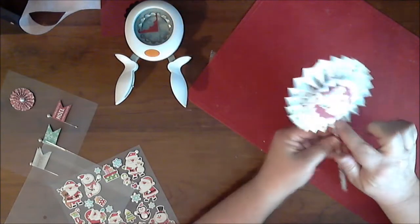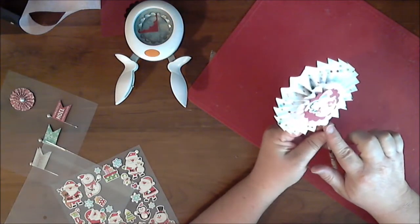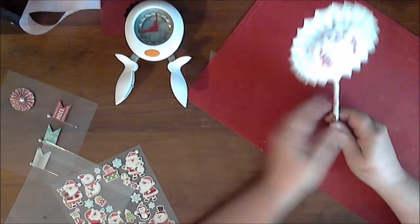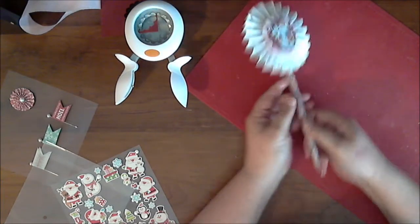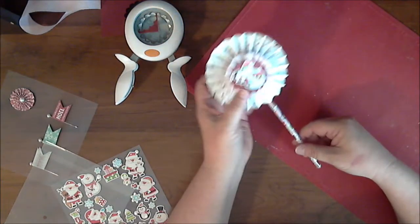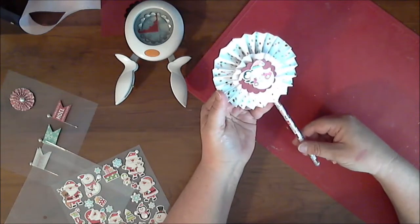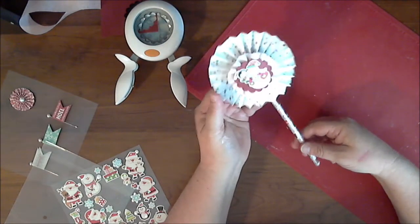Now you can be done right there if you want. Or you can tuck some ribbon up under here. And let it be a little streamer. I tend to keep them pretty simple. Because if they're pencils you don't want too much stuff hanging off of them. So that is my rosette Christmas wand.